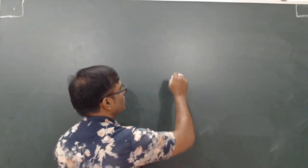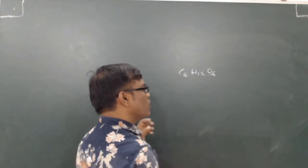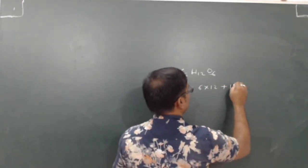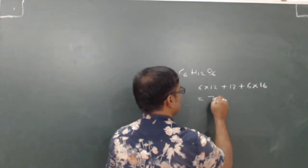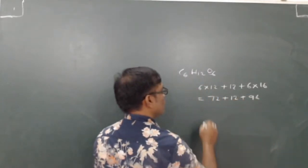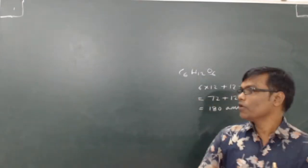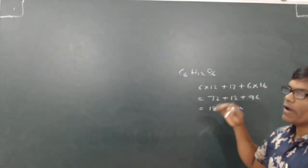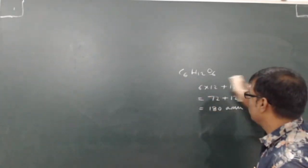Similarly, what is the molecular mass of glucose, C6H12O6? The molecular mass is 6 times 12 plus 12 plus 6 times 16, which equals 72 plus 12 plus 96, which equals 180 AMU. This is the molecular mass of glucose. In the same way, you can calculate the molecular mass of any molecule.